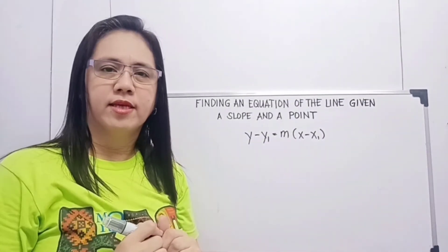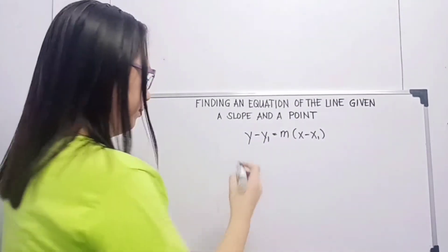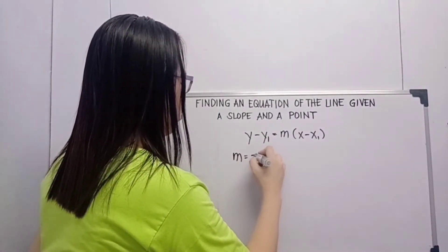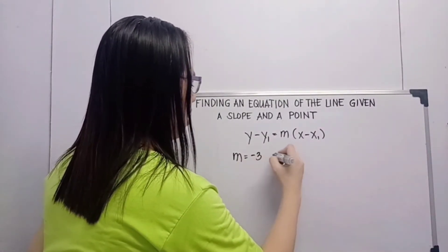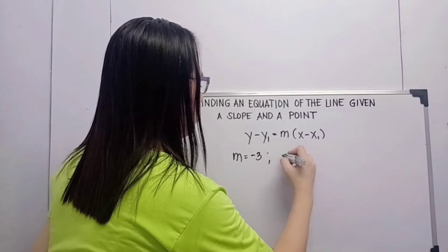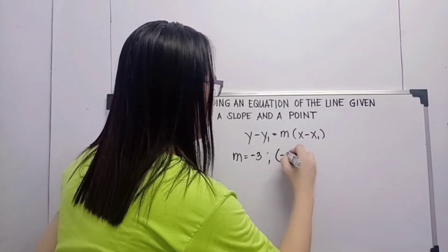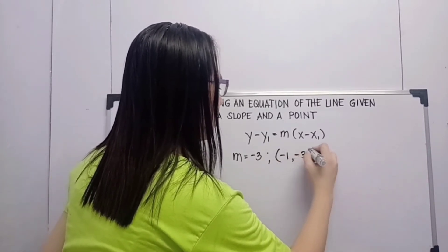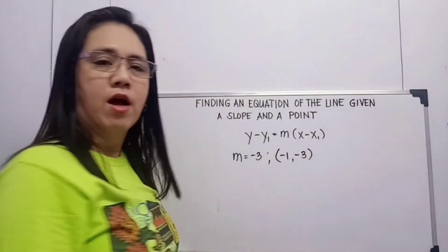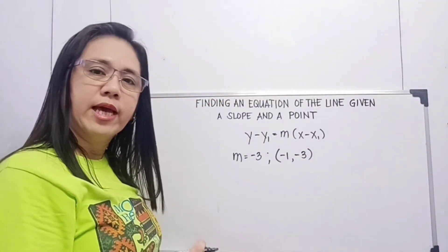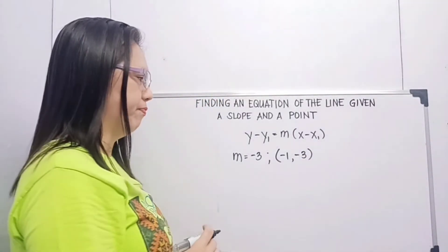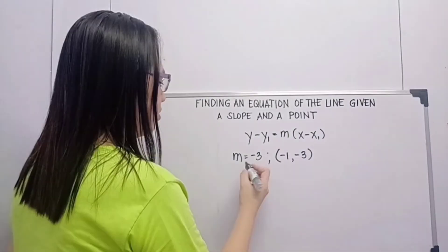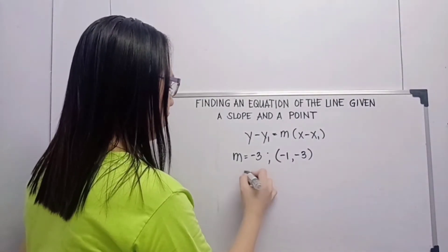This is our second example. So m is equal to negative 3 and our point is (negative 1, negative 3). So they are all negative. Let's try substituting.